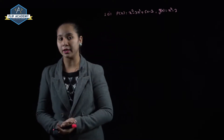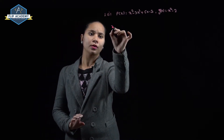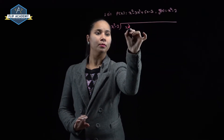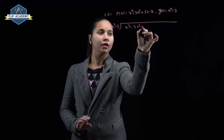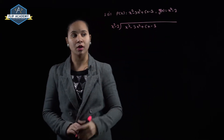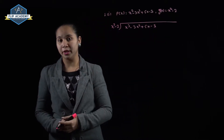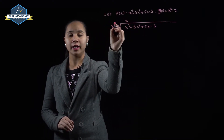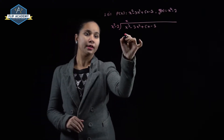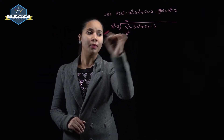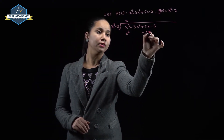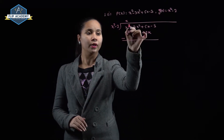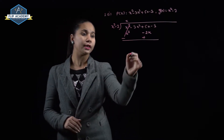We have to divide g(x) into p(x), so divide x² - 2 into x³ - 3x² + 5x - 3. x² goes into x³, x times. Multiply x by (x² - 2) to get x³ - 2x. Change the sign: minus and plus. x³ cancels, bringing down to get -3x² + 7x - 3.